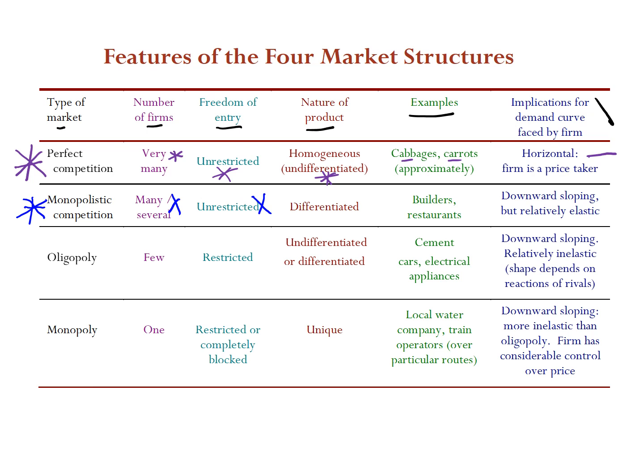The products sold in monopolistic competition are differentiated — similar but not the same. Restaurants offer Chinese food, Indian curry, African food, or fish and chips. Other examples include builders and service providers doing similar work but with slight differences. The demand curve here is downward sloping but relatively elastic, meaning people respond noticeably to changes in price.